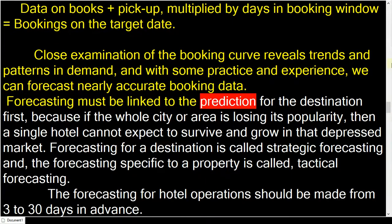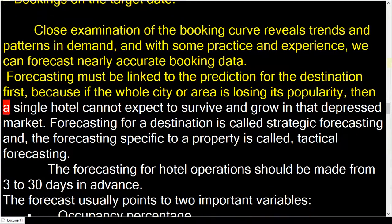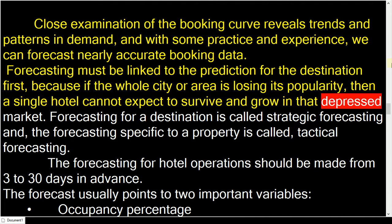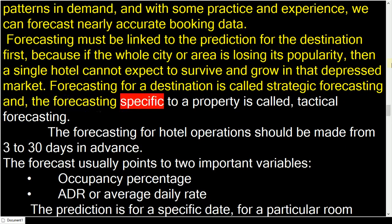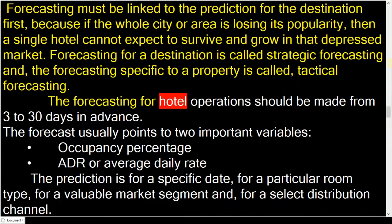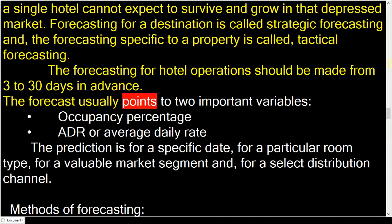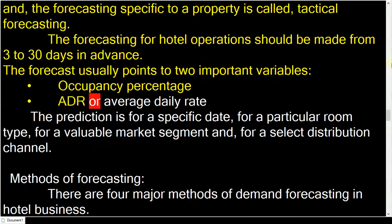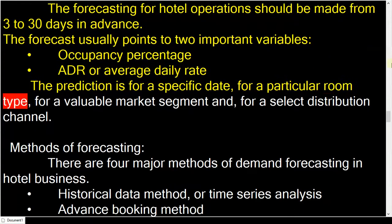Forecasting must be linked to the prediction for the destination first, because if the whole city or area is losing its popularity, a single hotel cannot expect to survive and grow in that depressed market. Forecasting for a destination is called strategic forecasting, and forecasting specific to a property is called tactical forecasting. Forecasting for hotel operations should be made from 3 to 30 days in advance, and usually points to two important variables: occupancy percentage, and ADR or average daily rate. The prediction is for a specific date, for a particular room type, for a valuable market segment, and for a select distribution channel.